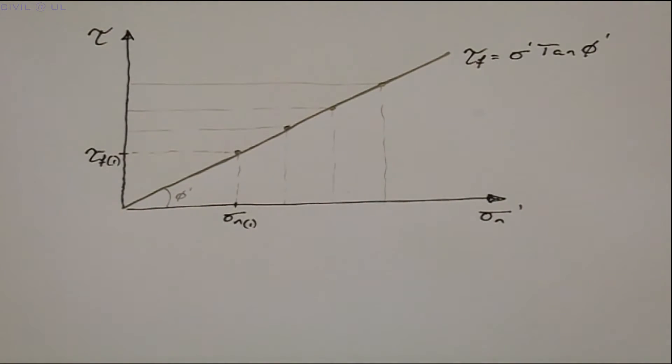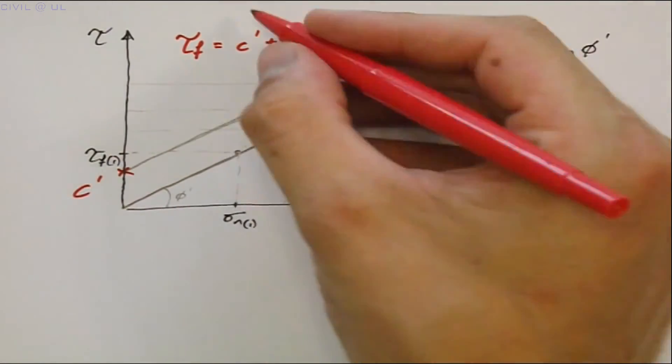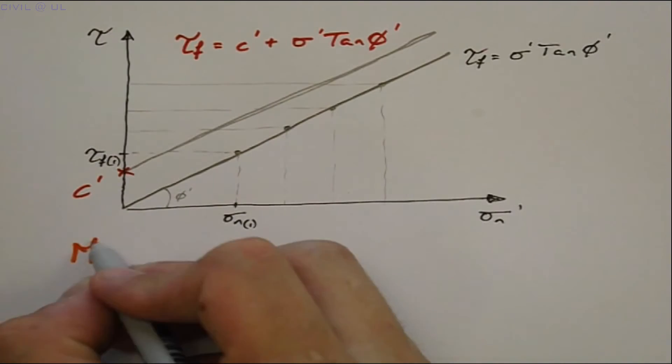Sometimes, the failure line cuts the shear stress axis at an intercept C dash, and the equation is modified as shown. This is known as the Mohr-Coulomb failure line.